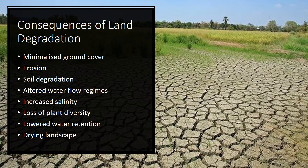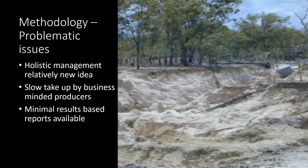Land degradation caused by incorrect pasture management and livestock management often leads to minimised ground cover, erosion, soil degradation, altered water flow regimes and increased salinity, which in turn leads to a loss of plant diversity and therefore has a massive impact on water retention. This lack of water retention is one of the largest reasons for our continually drying continent — a massive environmental issue that needs to be turned around as soon as possible to ensure a future for all involved ecosystems.